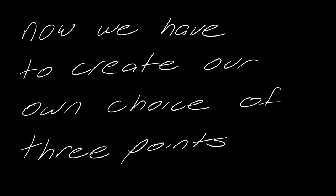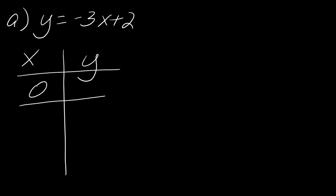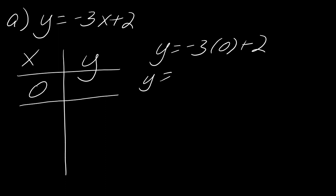Now we have to create our own choice of three points. Sometimes exercises want you to fill in a table; other times you're just told to make up three points. My advice: if you have your choice, choose the easiest ones to calculate. Looking at this problem, if I plug in 0 for x, that makes it really simple — all that term drops out and I'm just left with y = 2.